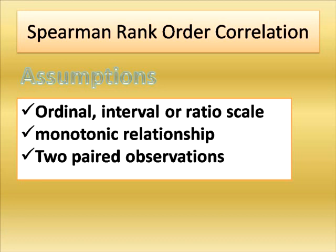The second assumption is a monotonic relationship. As explained, if one variable increases, another also increases; if one decreases, another also decreases. There is also an inverse relationship where one variable increases while another decreases, representing positive, negative, or monotonic relationships. The third assumption is two paired observations — for example, observing daily exercise and drug consumption, or level of exercise and quality of exercise for one person.